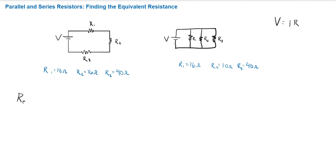These ones are super easy. The equivalent resistance here is just R1 plus R2 plus R3. So that's going to be 10 ohms plus 16 ohms plus 40 ohms. That gives us an equivalent resistance of 66 ohms.